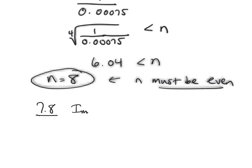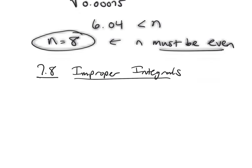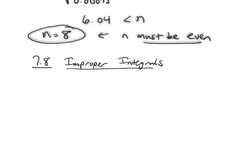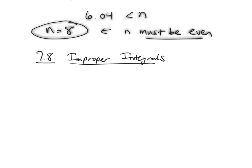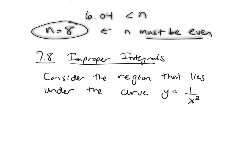So this section is about something called improper integrals. We're really going to continue talking about definite integrals again, so let me do a setup for you. Let's say we want to consider the region that lies under the curve y equals 1 over x squared, above the x-axis and to the right of x equals 1.